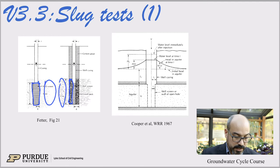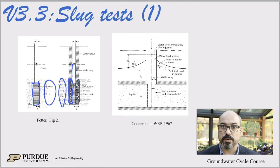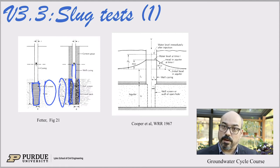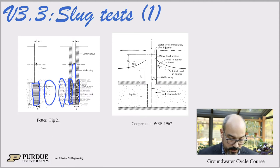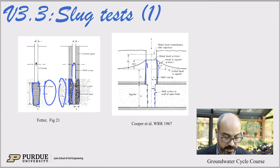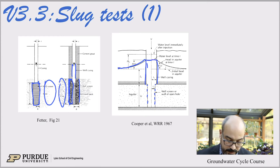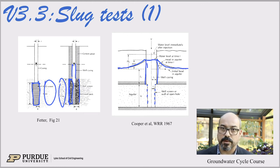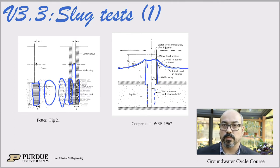Another thing to pay attention to is that the casing and the well screen may have different diameters. In many slug test equations, you need to know the radius of the casing versus the radius of the screen. They may be the same or different — as shown in this example where the screen has a different radius from the casing above. This shows the behavior of the piezometric head in a confined aquifer: it is raised and then drops back down, as opposed to pumped wells.